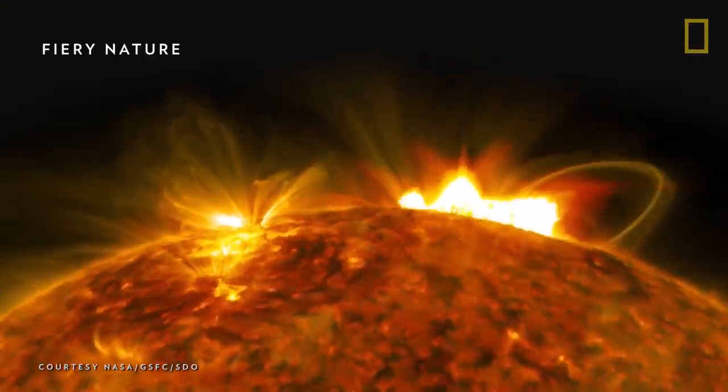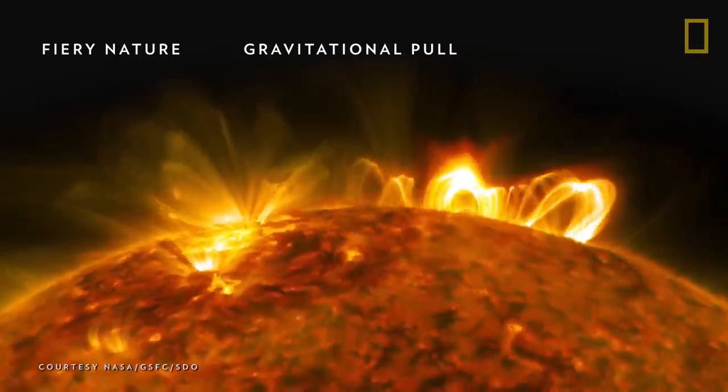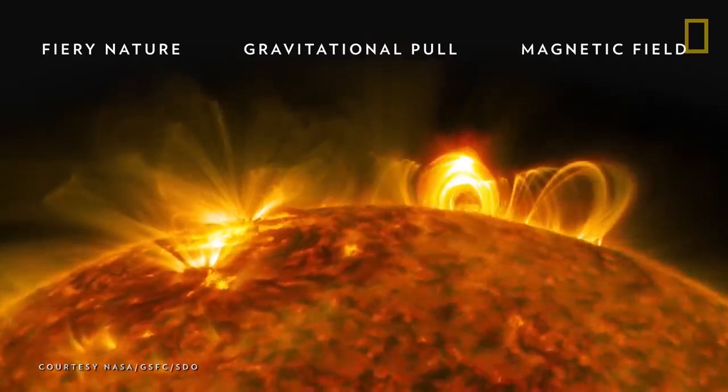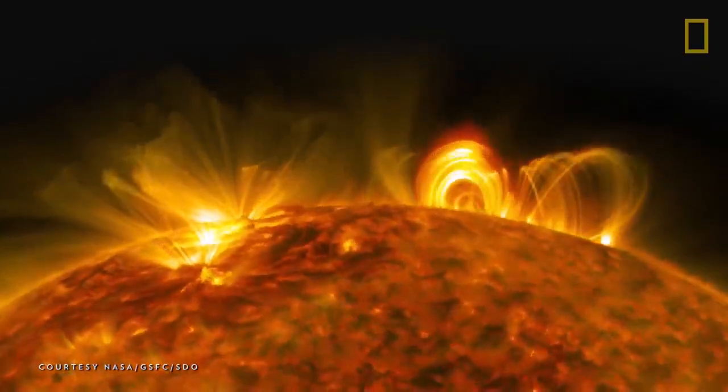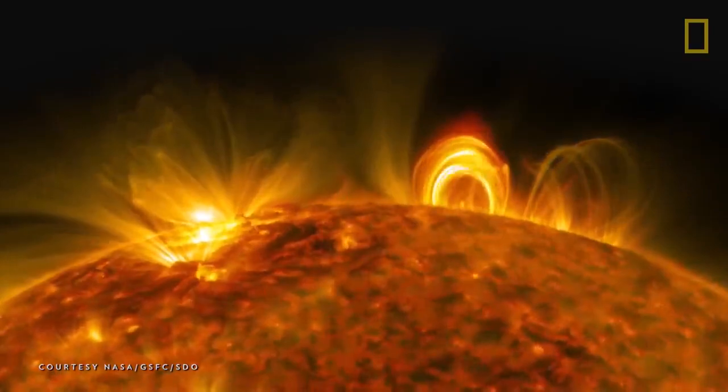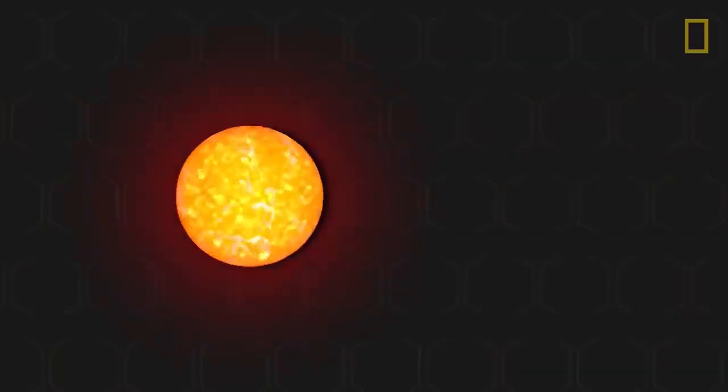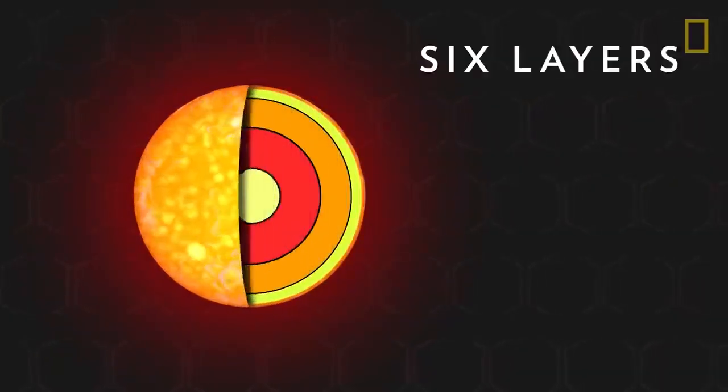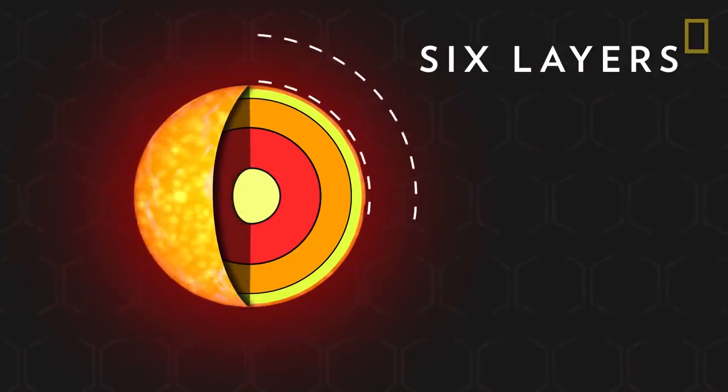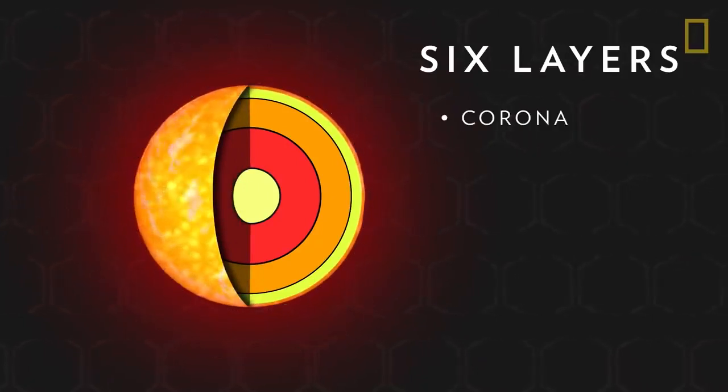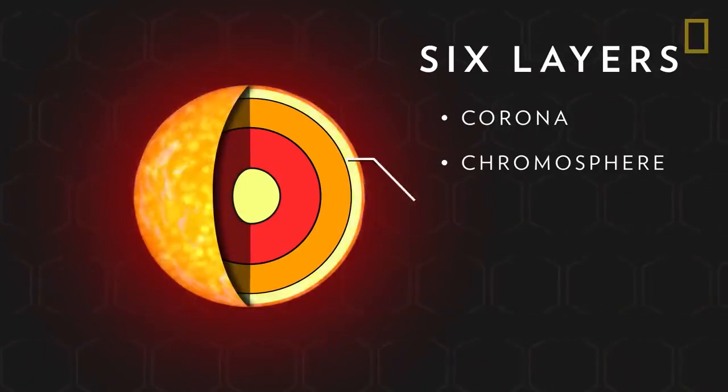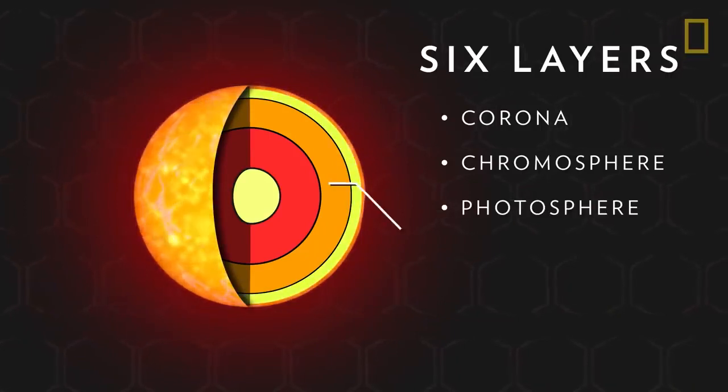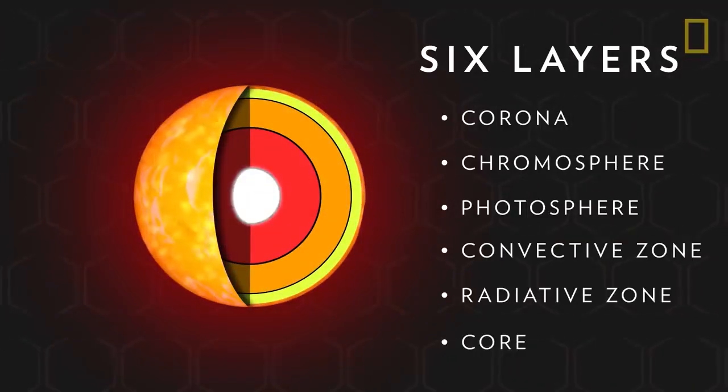The sun's fiery nature, along with a tremendous gravitational pull and an extensive magnetic field, helped it to become the heart of our solar system. The sun can be divided into six layers or regions: the corona, the chromosphere, the photosphere, the convective and radiative zones, and the core.